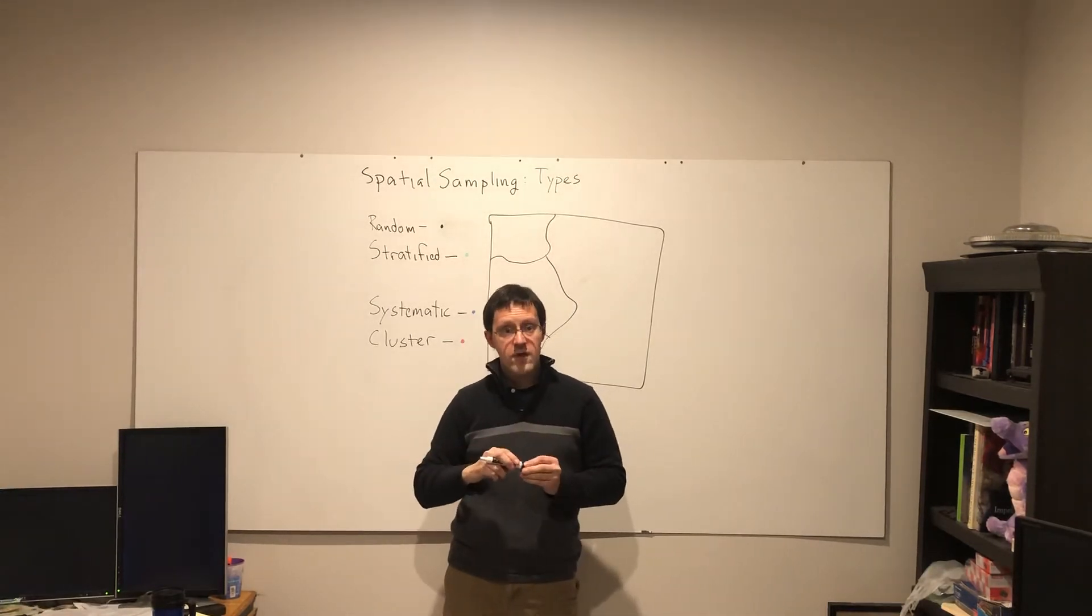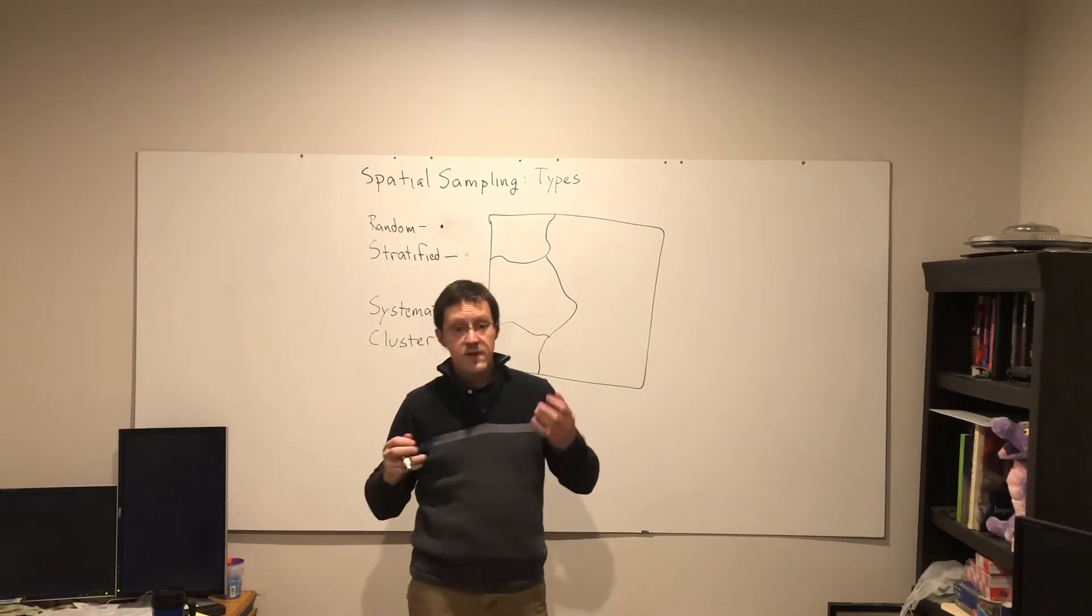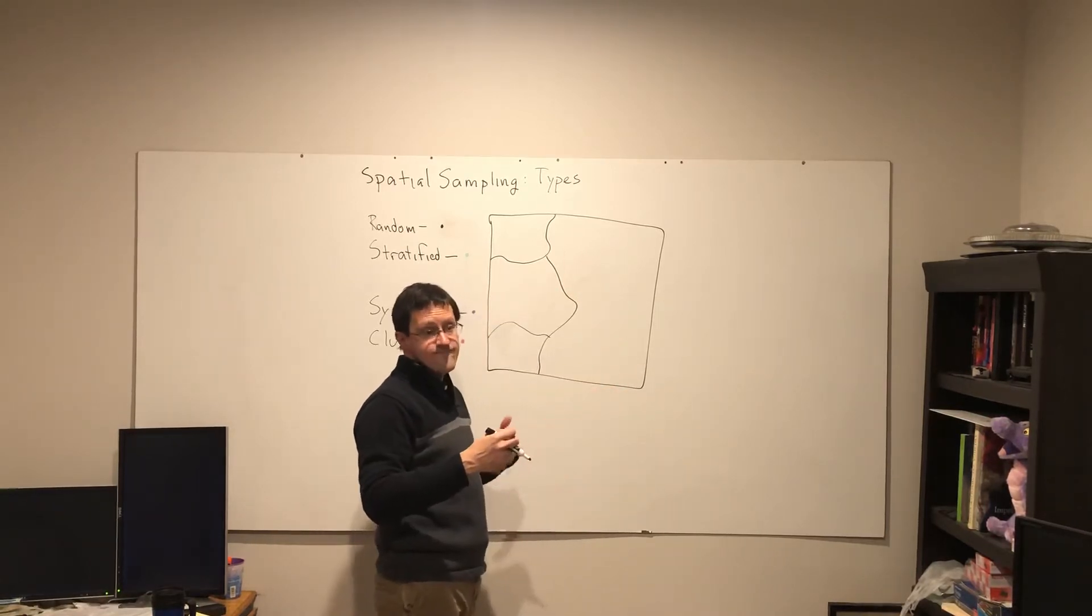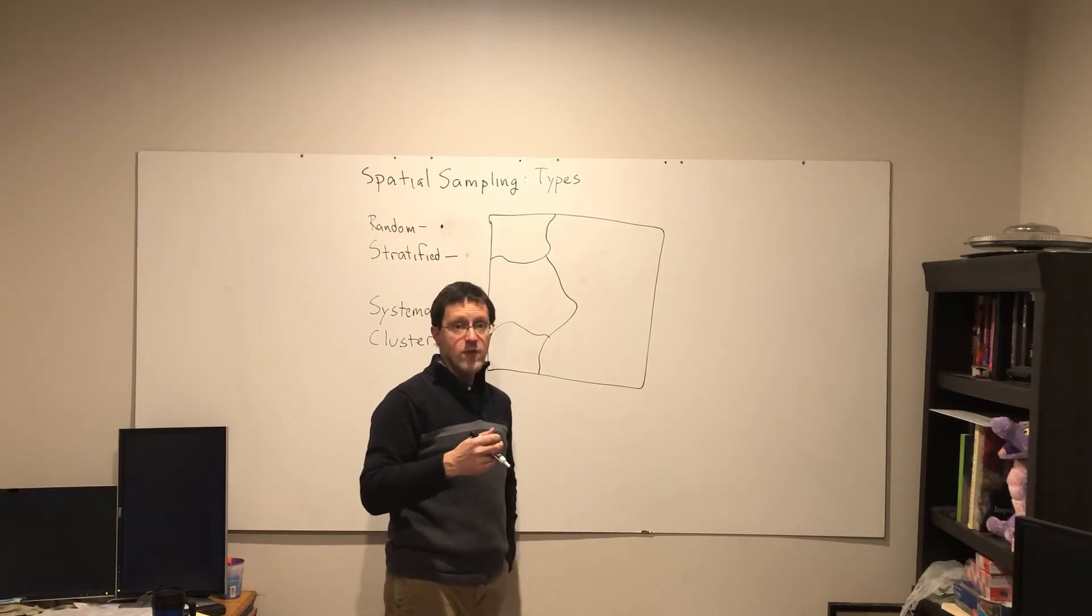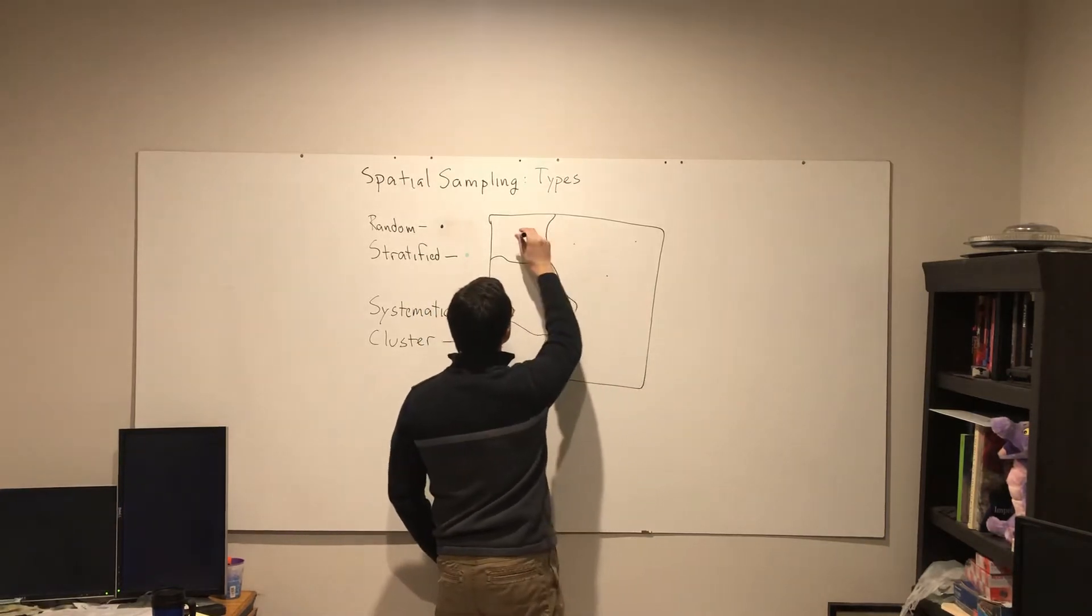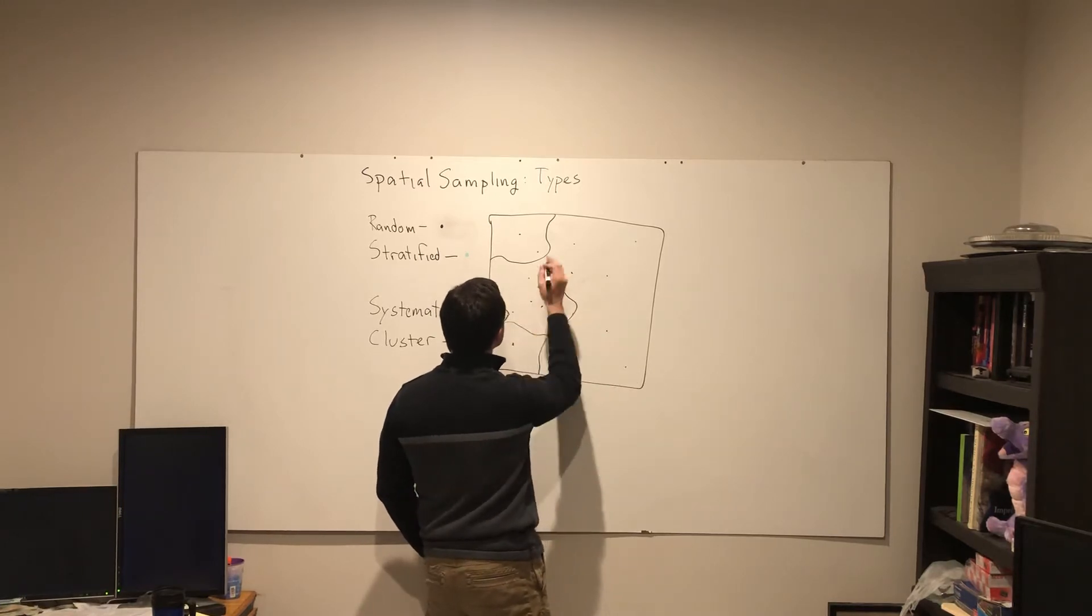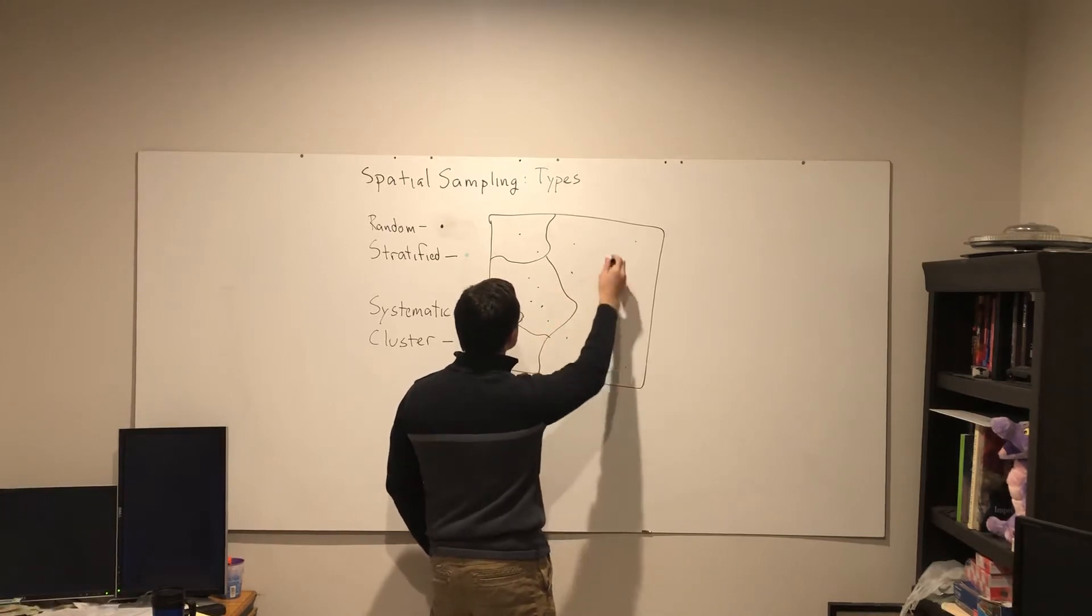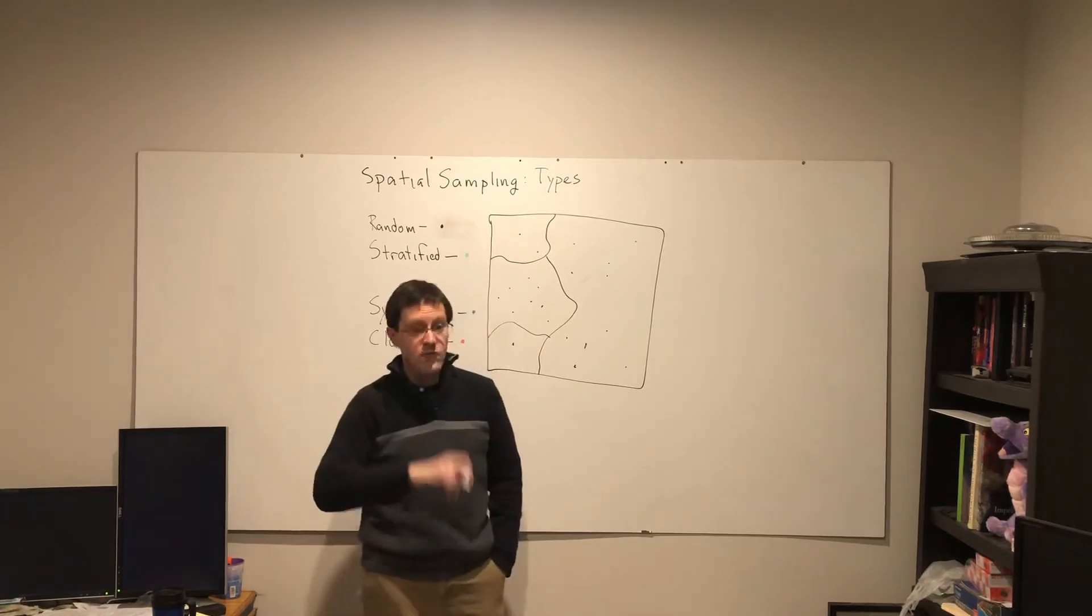First, I have the random sample. I have a study area here, and let's say for a random sample, I might want 20 points from this area. Okay, I just put 20 points up there.